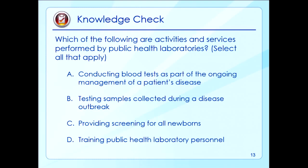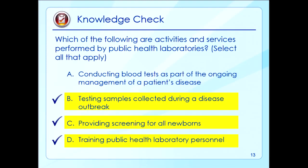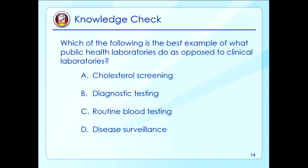Which of the following are activities and services performed by public health laboratories? B, testing samples collected during a disease outbreak; C, providing screening for all newborns; and D, training public health laboratory personnel, are all examples of activities and services that public health labs provide. Answer A — conducting blood tests as part of the ongoing management of a patient's disease — relates to a clinical laboratory that performs tests as part of the medical management of an individual patient.